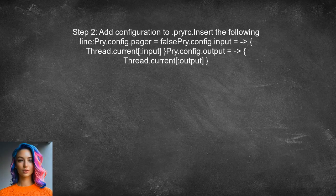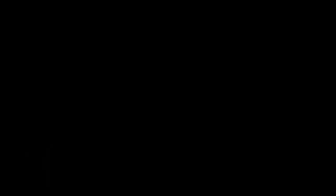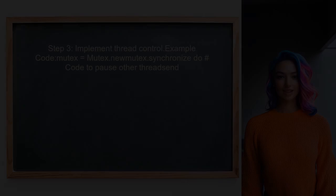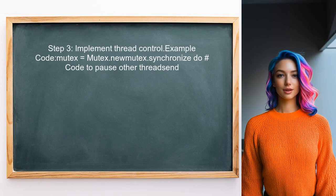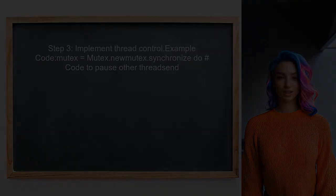Next, you need to add a specific configuration to the .pryrc file. This configuration will pause all other threads when binding.pry is triggered. After that, implement a method to pause the other threads — this can be done by using a mutex to control access to the console output.